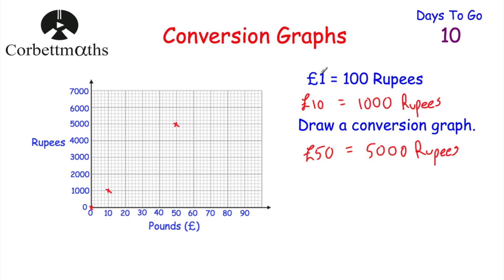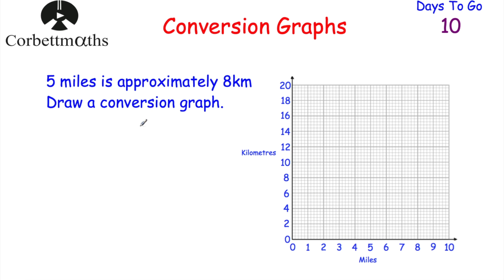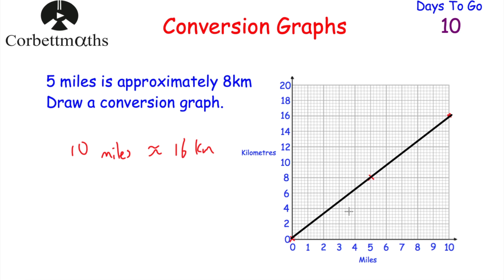Let's look at one more: we have axes for miles and kilometres and we're told that 5 miles is approximately 8 kilometres. We plot that point, then zero miles equals zero kilometres — so (0, 0) is another point. Doubling gives 10 miles equals 16 kilometres. These three points form a nice straight line, so we use a ruler and pencil to draw a straight line through them — and we've drawn our conversion graph.